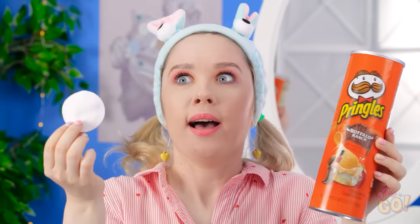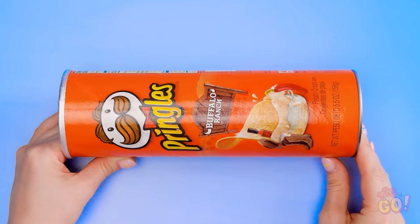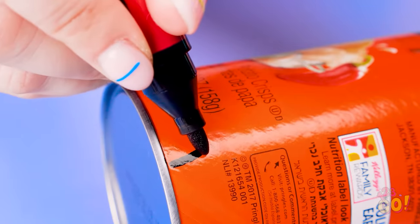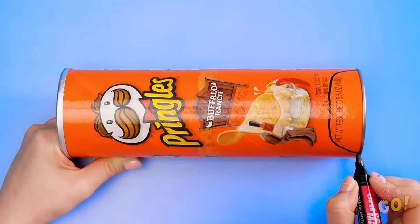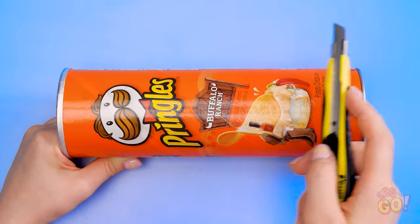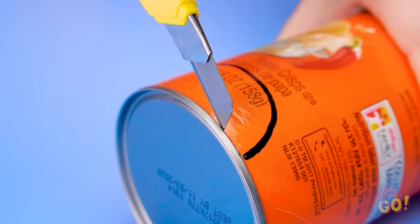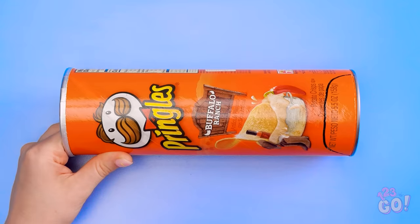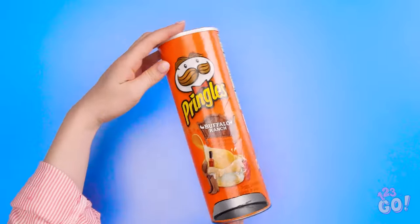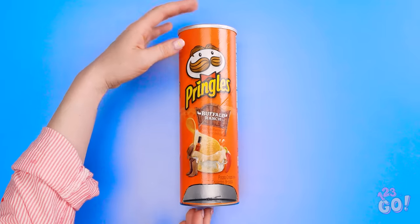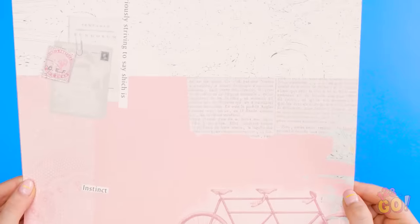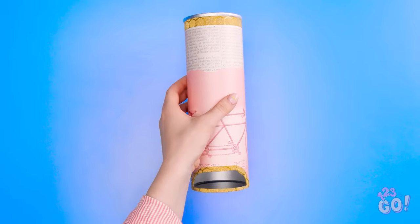Wait a minute! Have an old Pringles can? Draw a U-shape at its bottom. Then cut along the line with a blade. Always aim the blade away from you. Now take the piece out and stand the can back upright. Next, cover it with your favorite paper, and you're done!